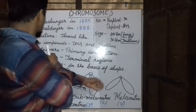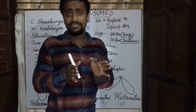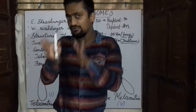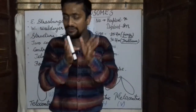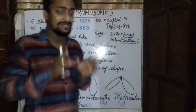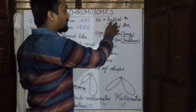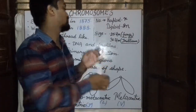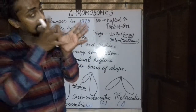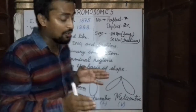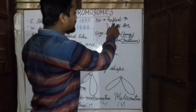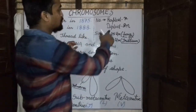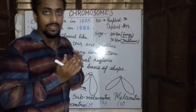If we classify the chromosomes on the basis of number, they are classified into two types. First is the haploid, which means the half number of chromosomes, and diploid, which means the double number of chromosomes. The haploid is usually represented by N while the diploid is represented by 2N.